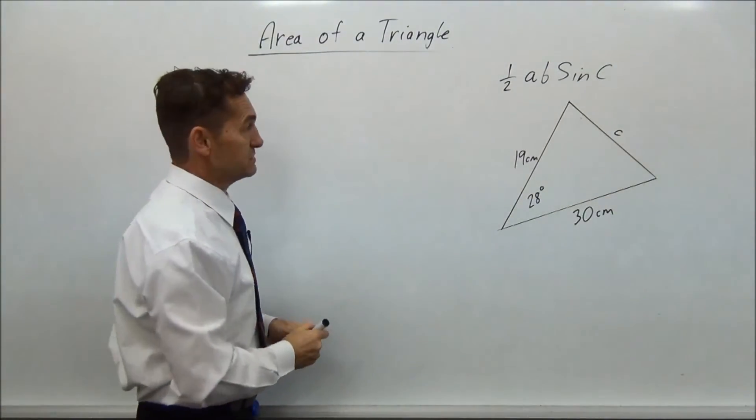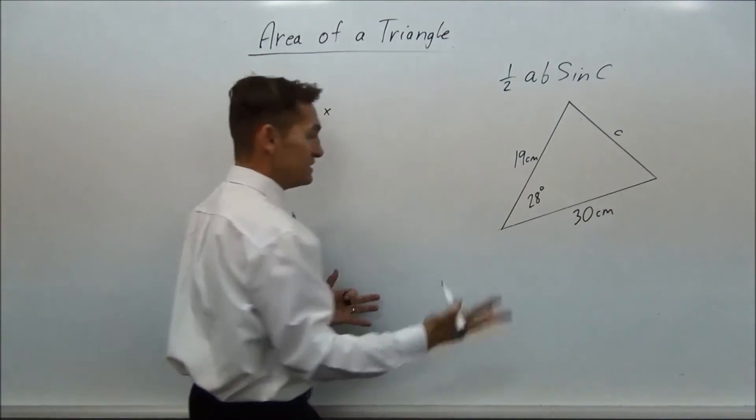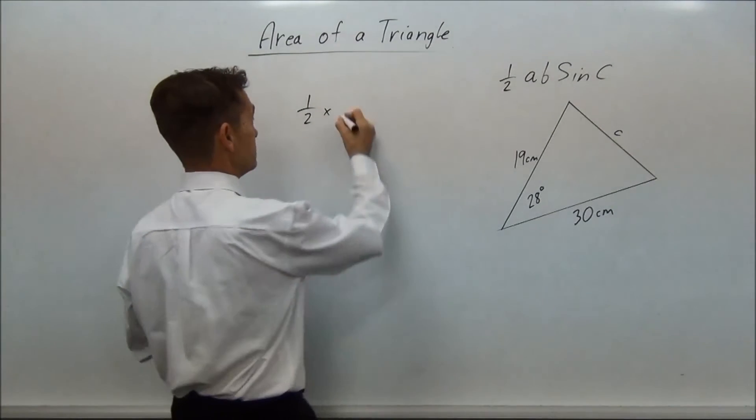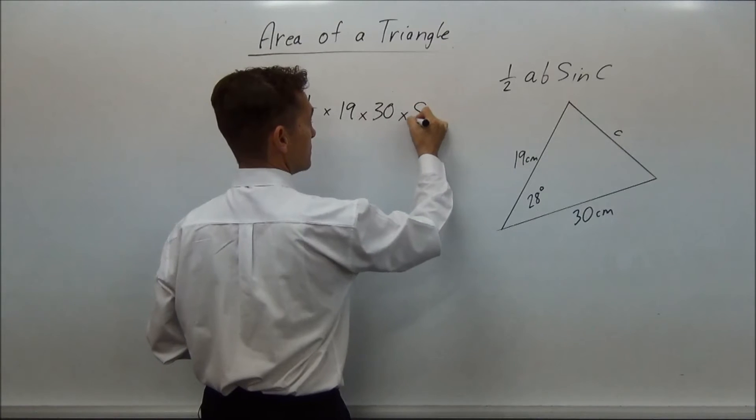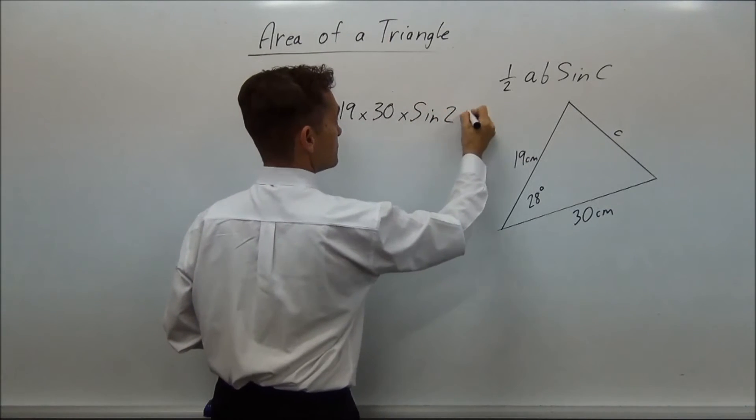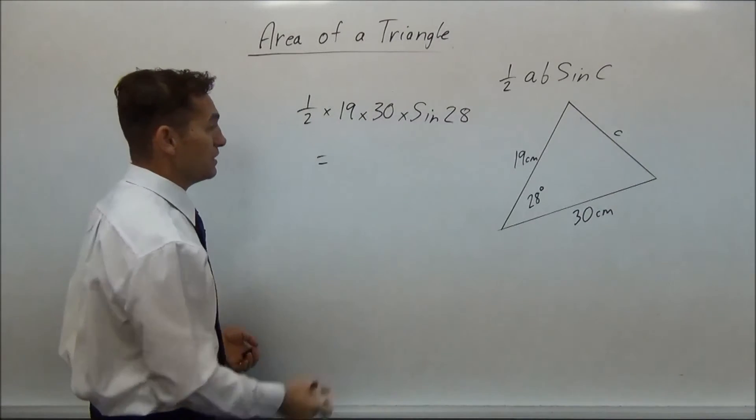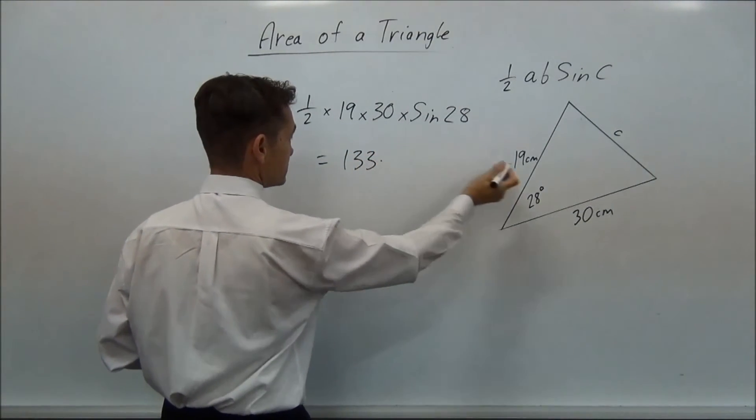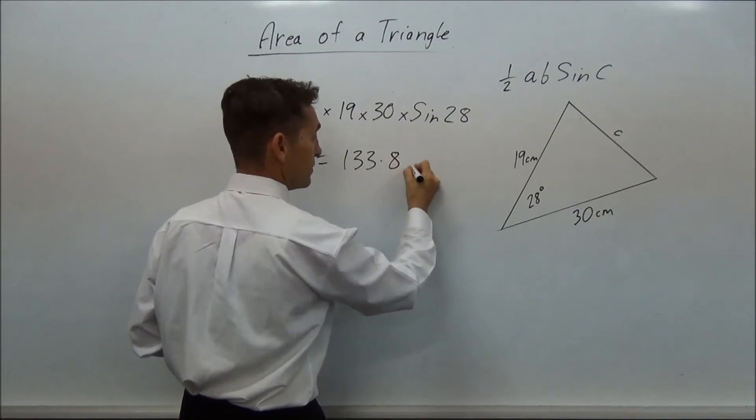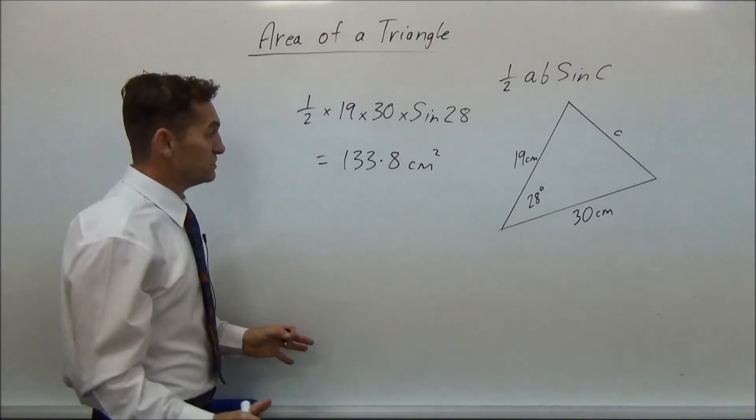So half AB sine C, so you're going to go half multiplied by, like I said, it doesn't matter which one you put as A and B. So we'll go 19 times 30 multiplied by sine 28. Punch that in your calculator, and you end up with 133.7999, which is basically 133.8 centimeters squared. And it's a very easy way to find the area of the triangle.